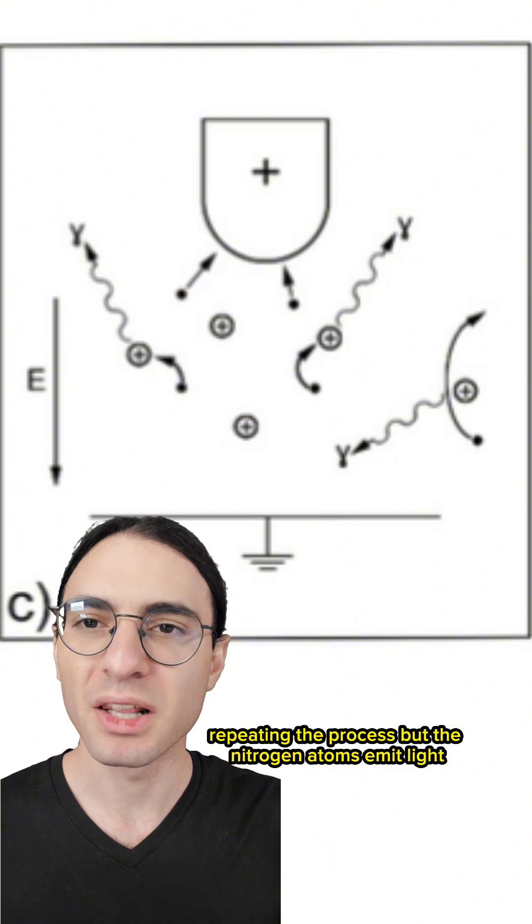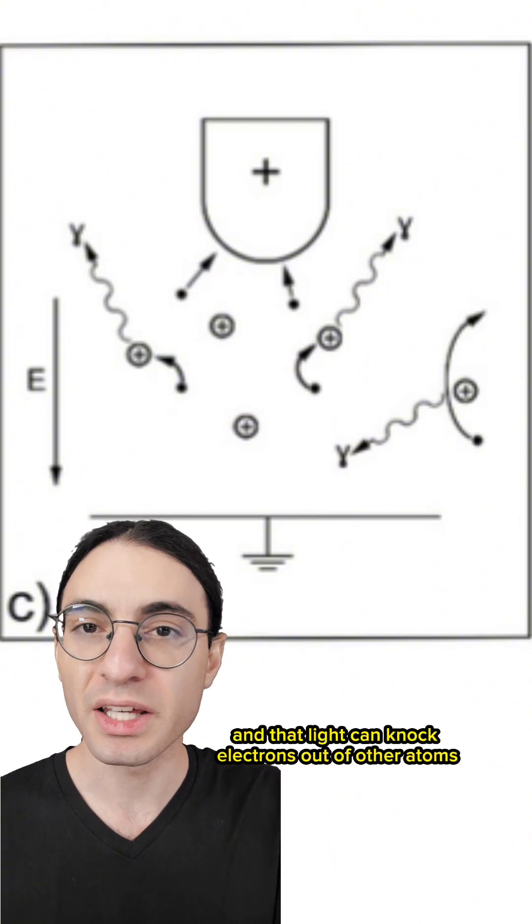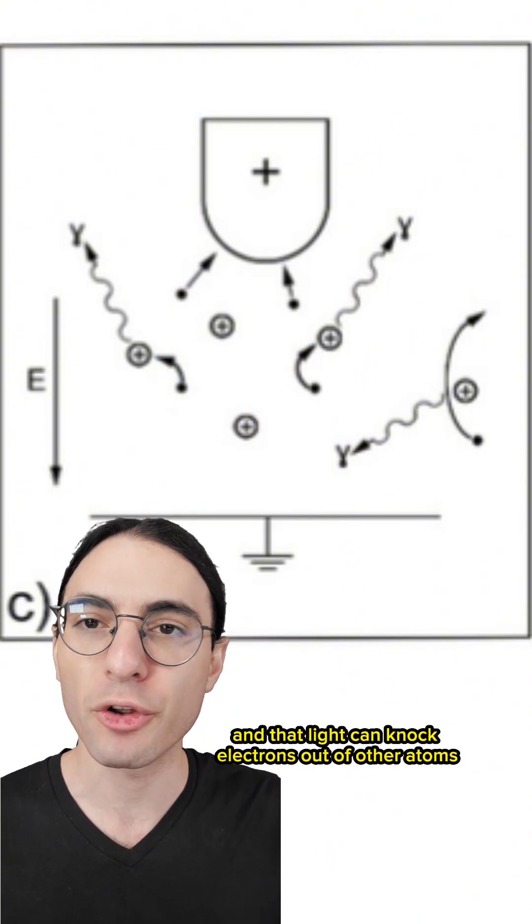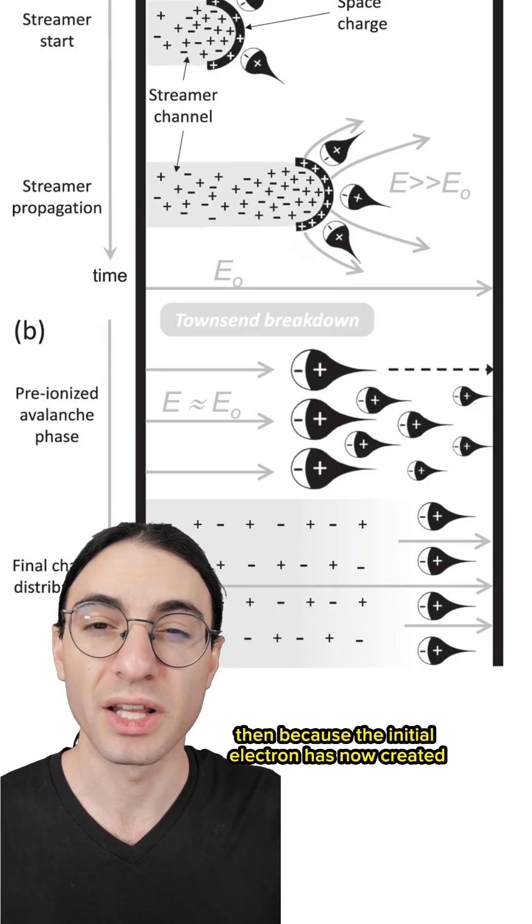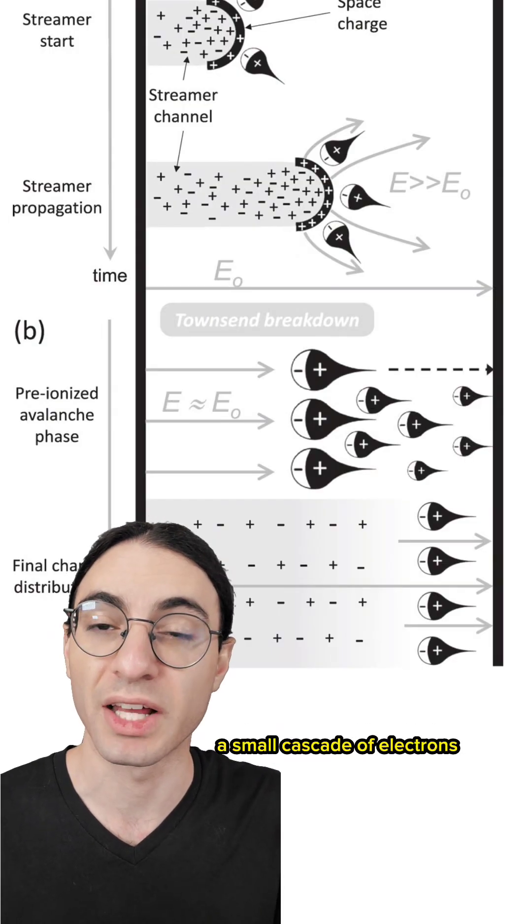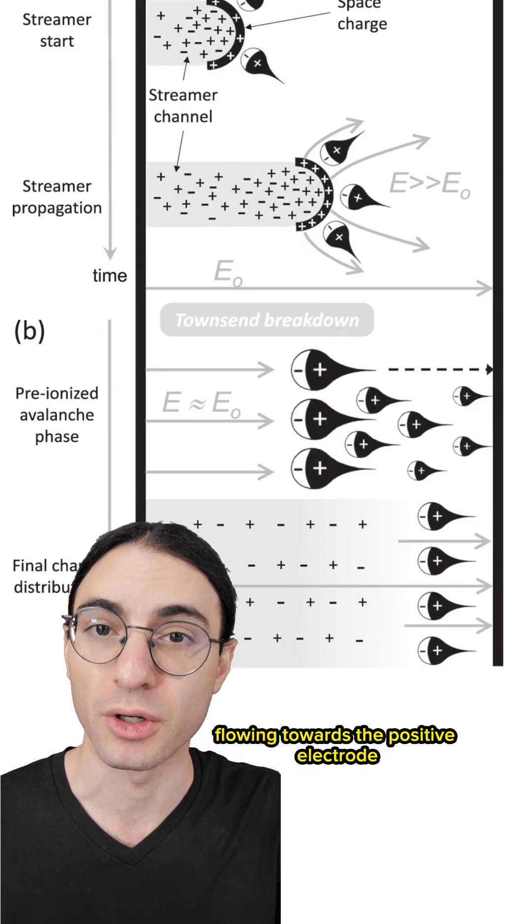But the nitrogen atoms emit light after they've been excited, and that light can knock electrons out of other atoms further away from the positive electrode.